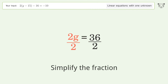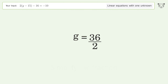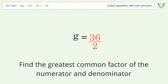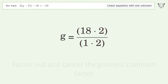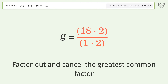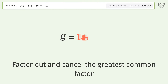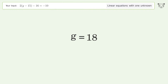Simplify the fraction by finding the greatest common factor of the numerator and denominator. Factor out and cancel the greatest common factor. And so the final result is g equals 18.